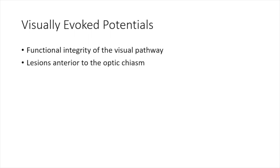Coming to our first topic: visually evoked potentials. VEP basically gives us an idea about the functional integrity of the visual pathway. It is not specifically about the retina — it is about the visual pathway in total. Any lesion anterior to the optic chiasm can be picked up by a VEP.